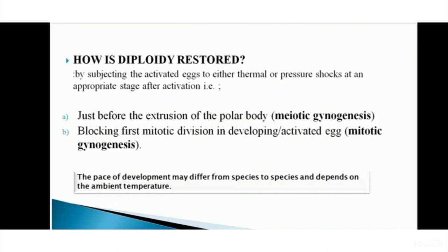On the basis of the timing of the shock, gynogenesis can be of two types. If the shock is given just before the extrusion of the polar body, it is called meiotic gynogenesis. If the shock is given to block the first mitotic division in the developing activated egg, it is called mitotic gynogenesis.